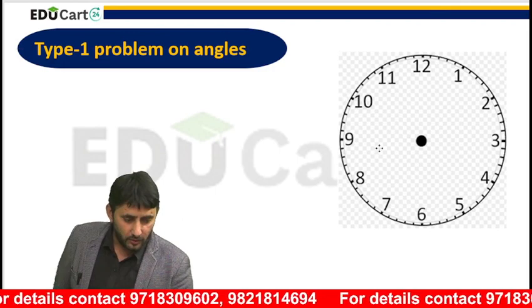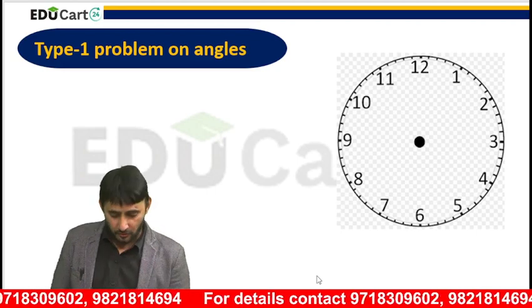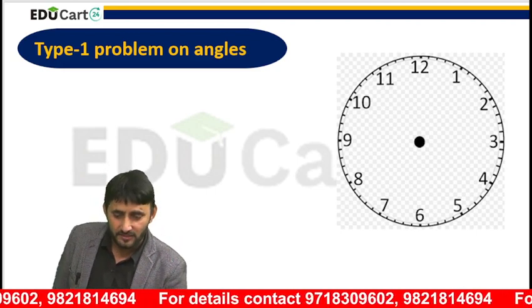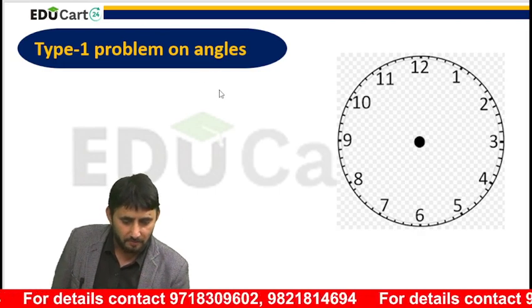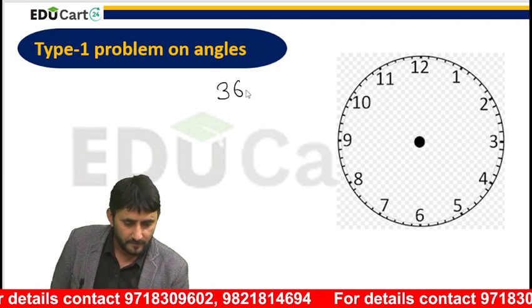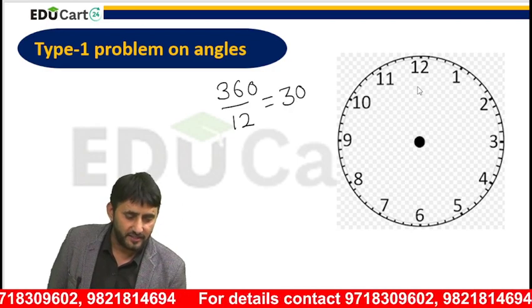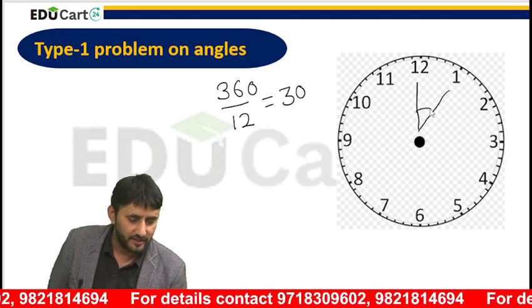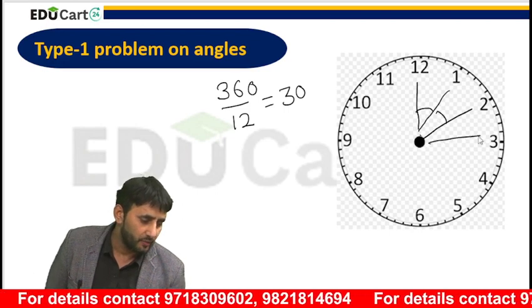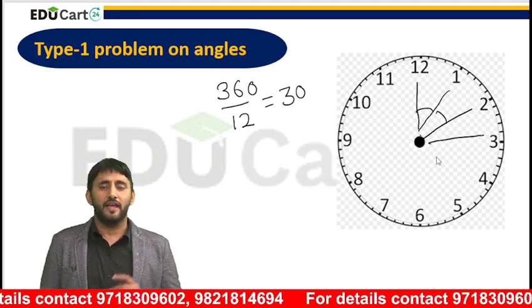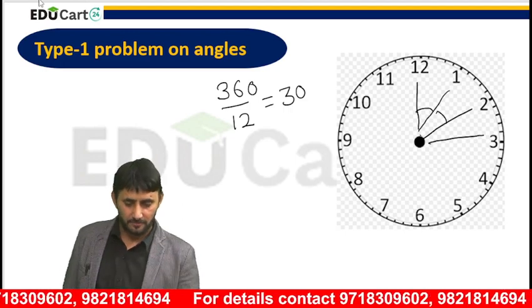First of all, the clock is divided into 12 equal parts. We know that the total angle in a clock is 360 degrees. So 360 degrees divided into 12 equal parts gives us 30 degrees per part. The angle between 12 and 1 is 30 degrees, similarly between 1 and 2 also 30 degrees, between 2 and 3 also 30 degrees. So the gap between every consecutive marking is 30 degrees in a clock.